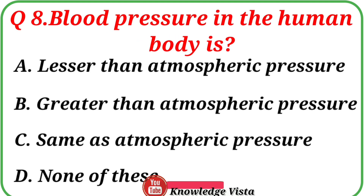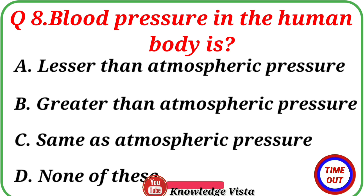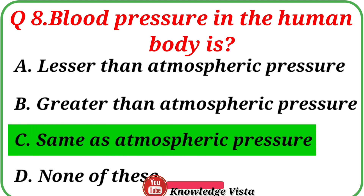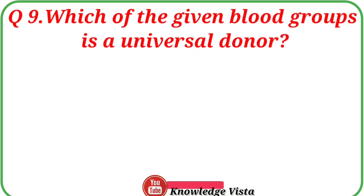Question number 8: Blood pressure in the human body is — Option A: Lesser than atmospheric pressure. Option B: Greater than atmospheric pressure. Option C: Same as atmospheric pressure. Option D: None of these. The correct answer is option C, Same as atmospheric pressure.